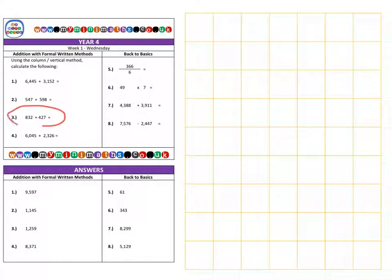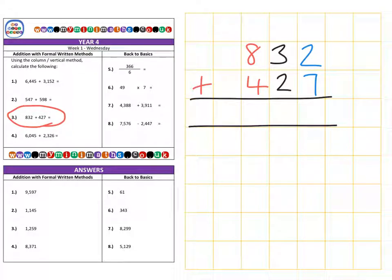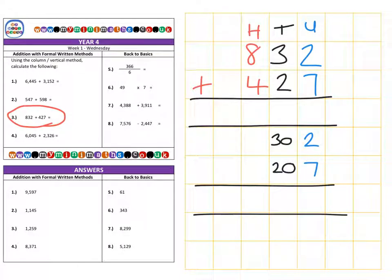And next we have question 3. So that's 832 and we are going to add 427. So again if we break it up into our units we have 2 units add 7 units. There's 3 tens that's 30 added to 2 tens which is 20. And finally in the hundreds column we have 800 plus the 400. And when we come to add them together we have 2 units add 7 units which is 9 units.